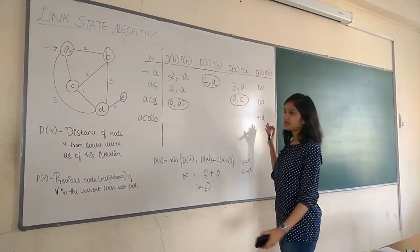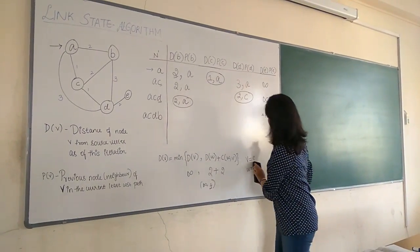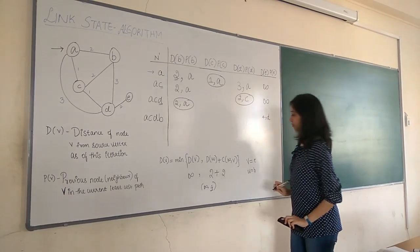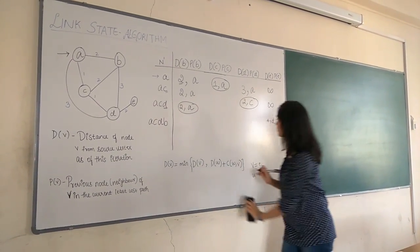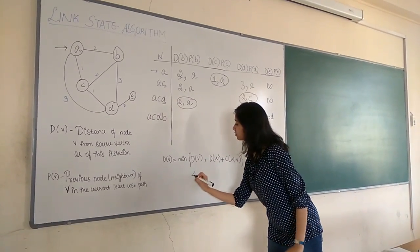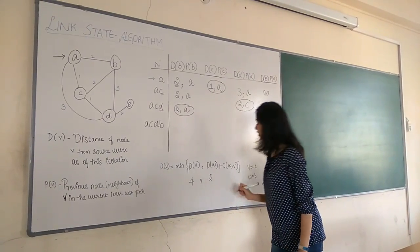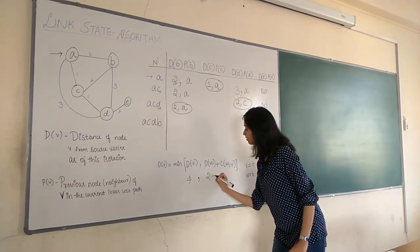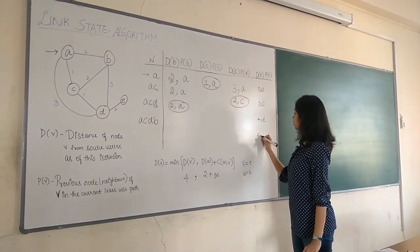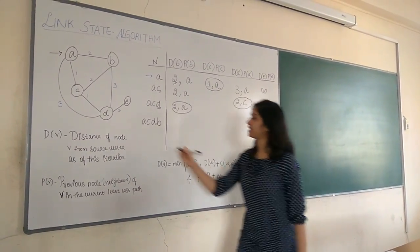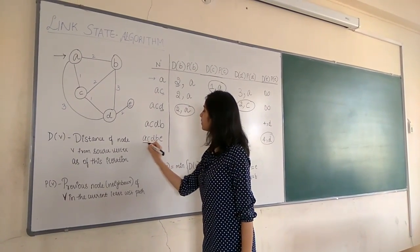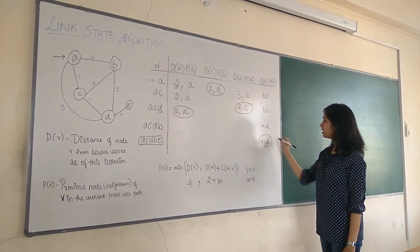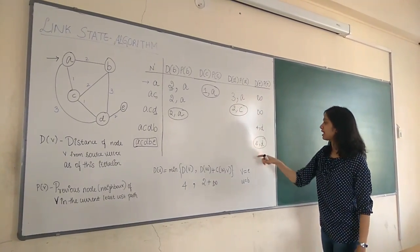We repeat the same step. The only node remaining is E. V is E and W is B. D(E) is 4 and D(W) is 2. The distance between B and E — there is no direct link — so that would be infinity. The minimum remains 4 comma D. So we add E to the subset. Now the subset has all the nodes in the graph, so we stop, and we get the minimum distances to all the nodes from the source vertex A. The highlighted values are the minimum distances, which you can cross-verify by looking at the graph.